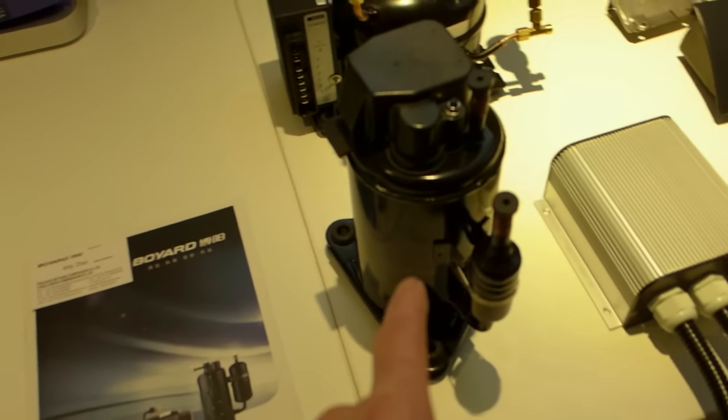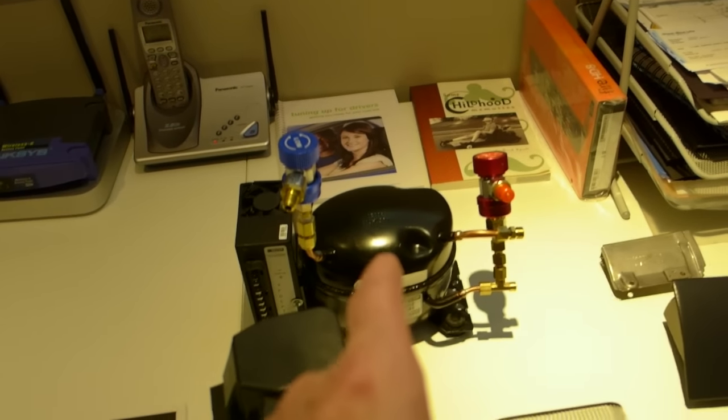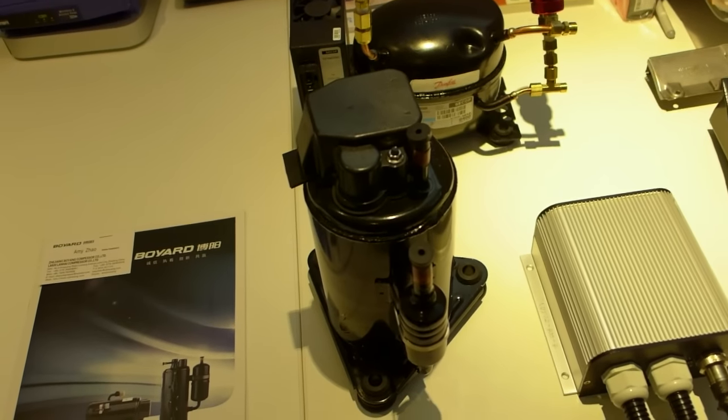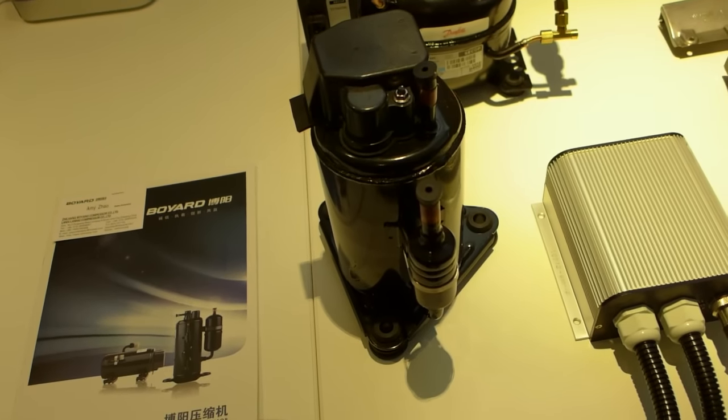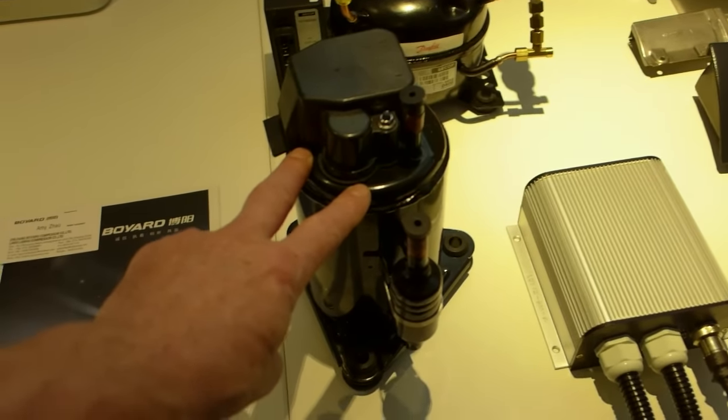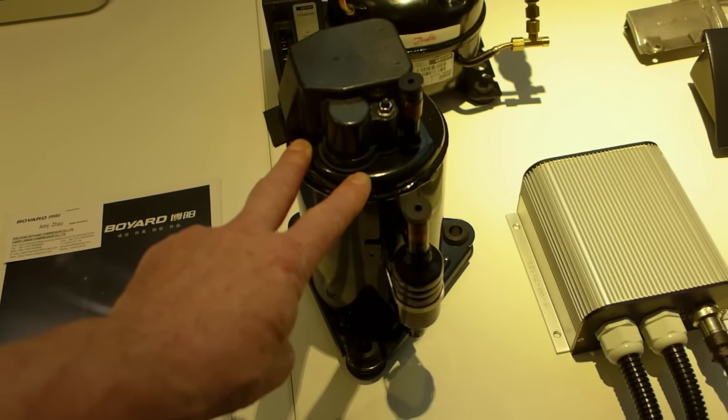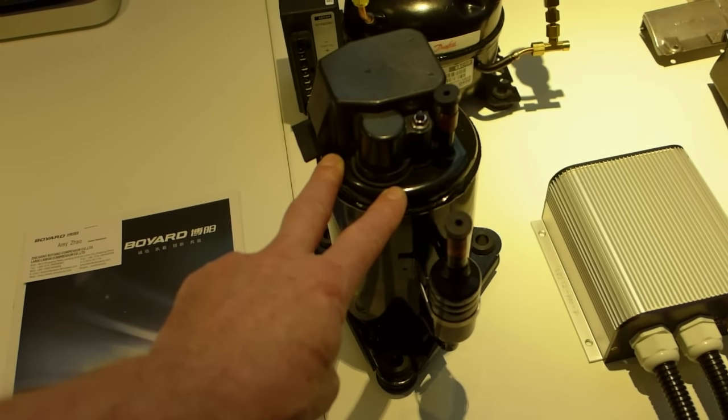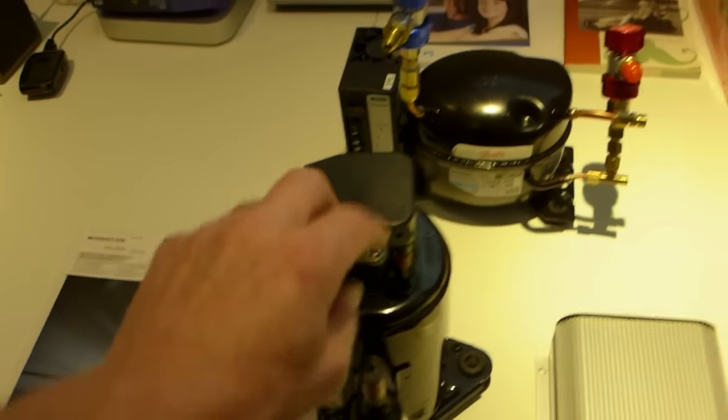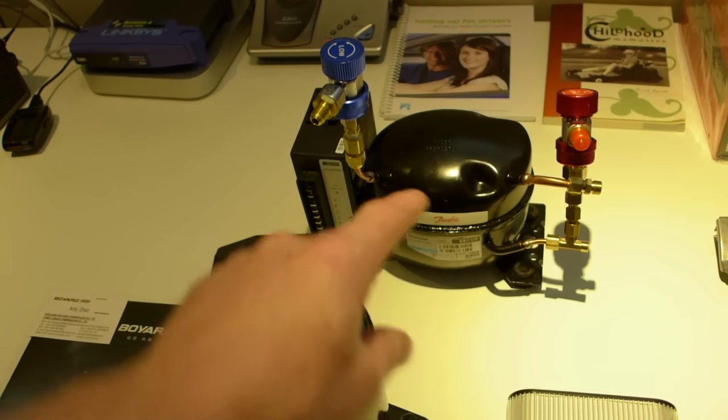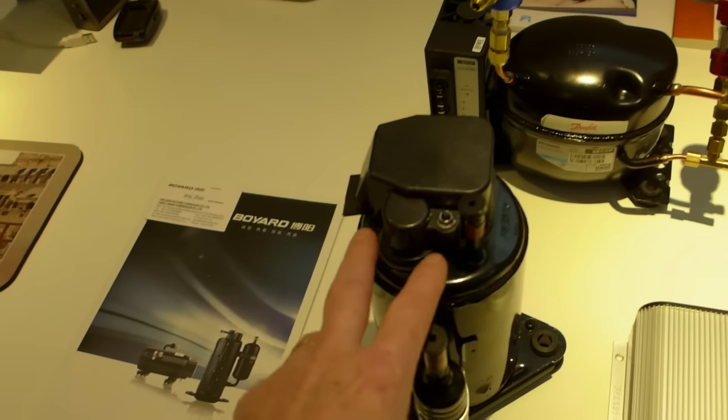And this is a 12 volt variable speed compressor, so that's variable speed as well. So you can turn up and down the RPM and get more or less power. And this is about three times the power. So, it produces about 3,000 BTUs of cooling. Whereas this is around 1,350 or less. So it's about two and a half times, I guess.